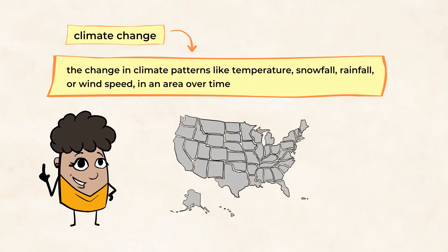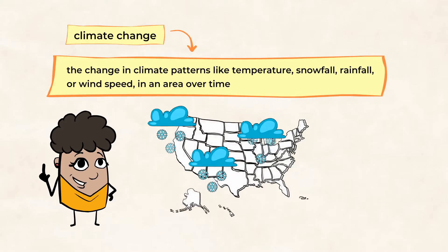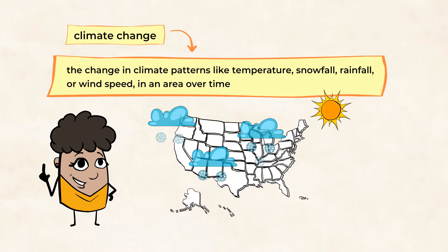For example, 25,000 years ago, the United States was covered in ice. That's crazy to think about. In the United States, we mostly have a warmer climate.